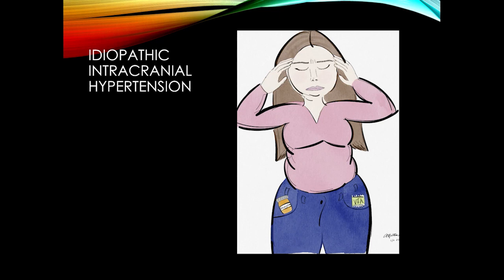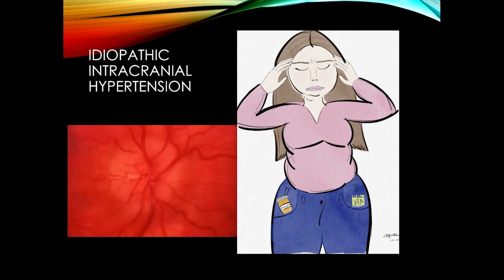Now let's go through a few secondary headaches in more detail — ones we don't want to miss. First, idiopathic intracranial hypertension, the older term being pseudotumor cerebri. These patients tend to be overweight younger women. Tetracycline use and excessive vitamin A use can also be associated with this condition. The importance of looking in the eyes is critical because these patients will have papilledema.